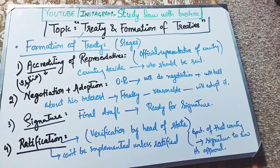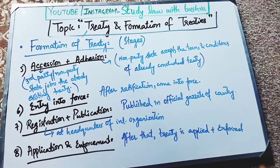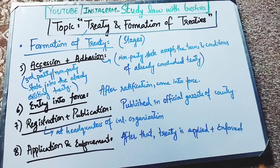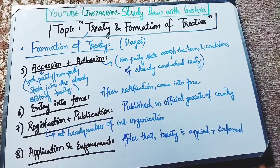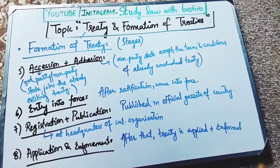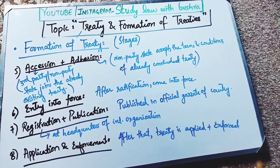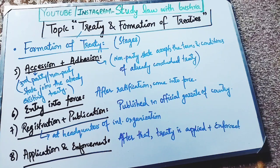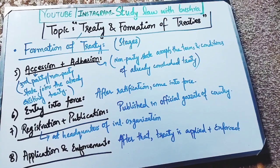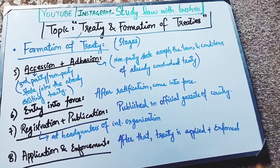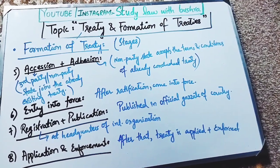The next stage is accession and adhesion. Accession means that a third party joins an already existing treaty through this process. When a non-party state joins an already concluded treaty, that is called accession. Adhesion means that they are not the original members of the treaty, but a third party — a non-party state — accepts the terms and conditions of the treaty. That process is called adhesion.